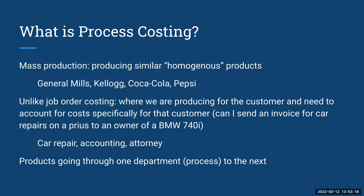Companies like General Mills, Kellogg, Coca-Cola, and Pepsi-Cola are making soda and cereal, and they're not doing it for an individual customer. This is a really important part of why these businesses use process costing — because they're starting with water or grains and it's going from one process to the next. So to do the accounting for the creation of their products, we use process costing.